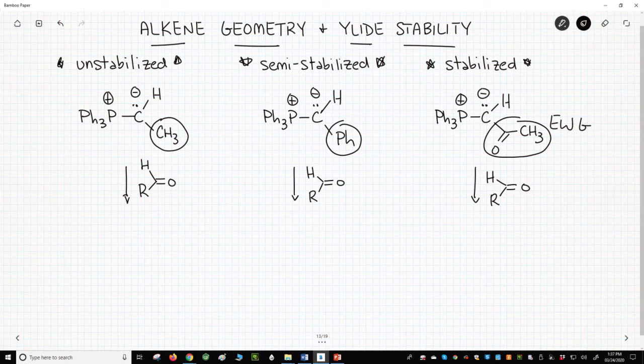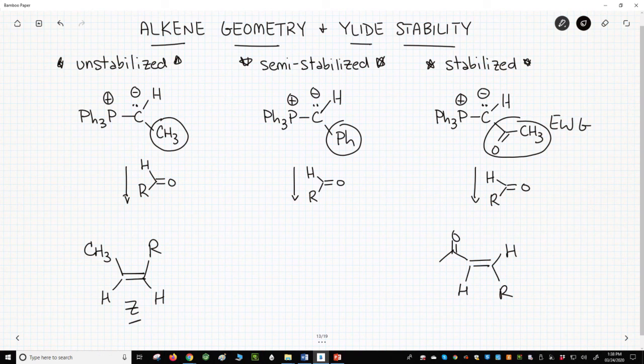When each of these reagents reacts with an aldehyde, they each give a different product. The unstabilized case gives the Z alkene product. The stabilized case gives mostly the E alkene product. The semi-stabilized case tends to give a mixture of E and Z.